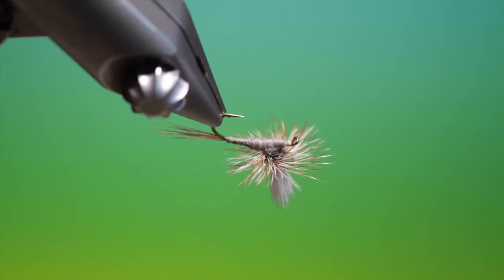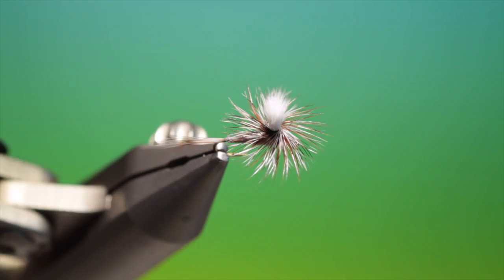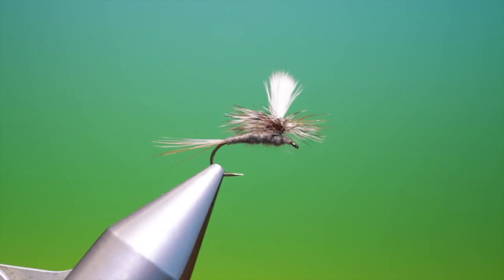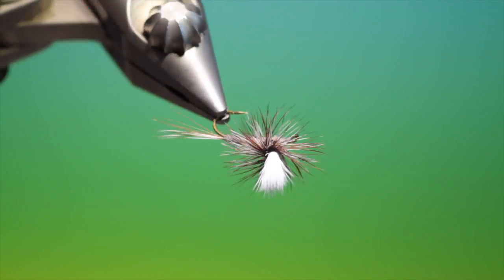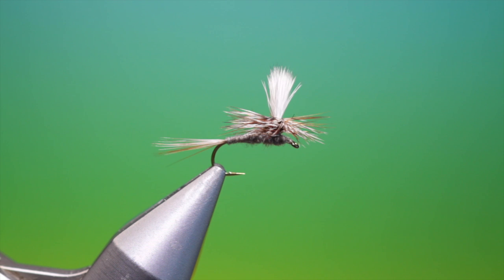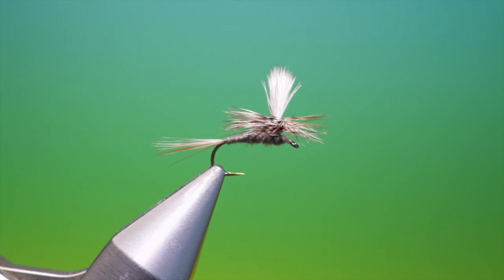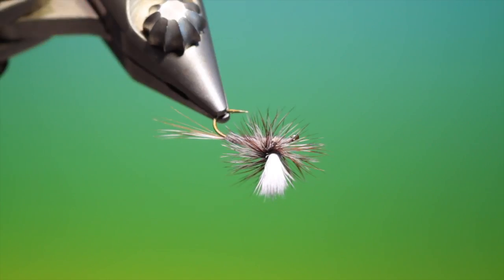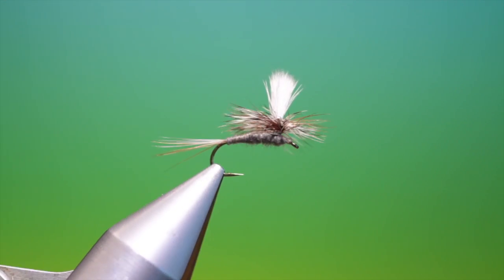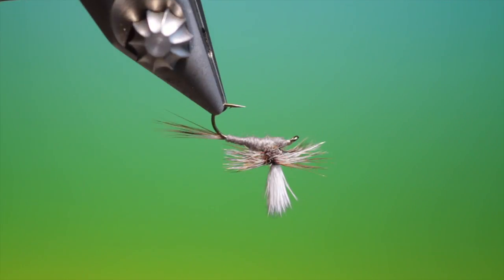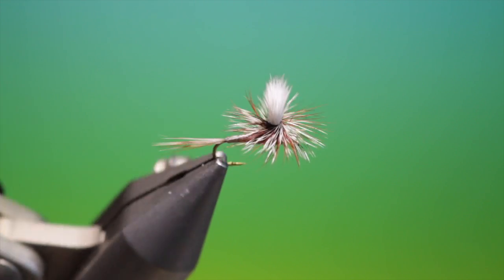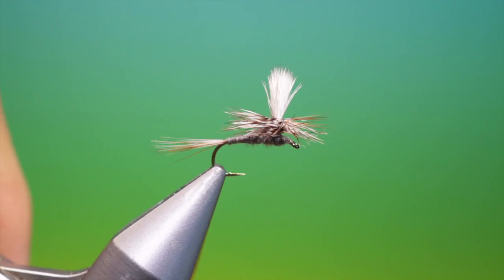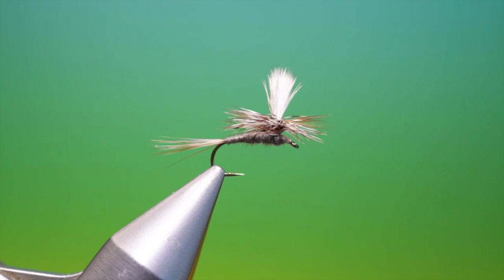And that's the finished parachute Adams. You can, instead of fiddling around with two different colored hackles, you can use instant Adams, which is a grizzly variant that has a lot of brown in it. Or you can use a Cree, which I believe is the original hackle for the Adams. But as usual, if you enjoy the videos, please like and subscribe. And thanks for watching.